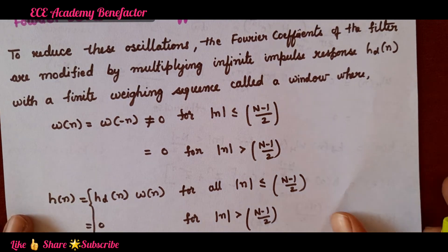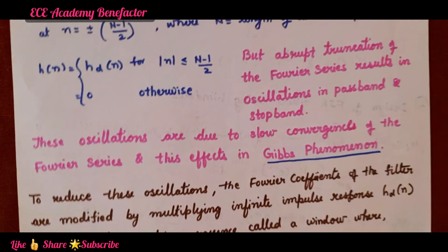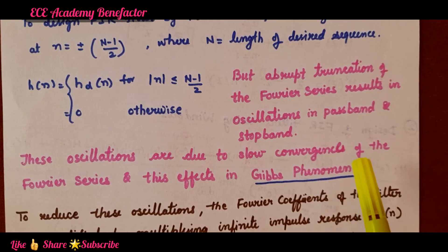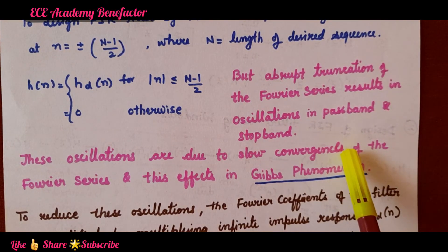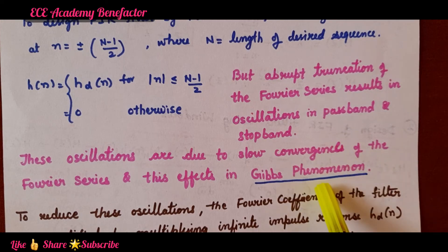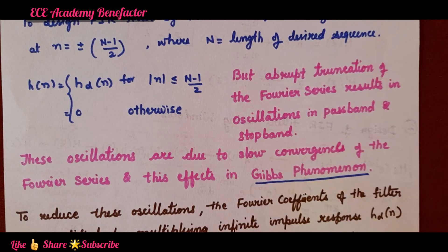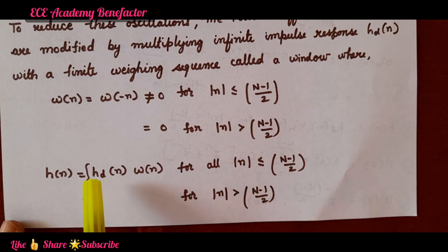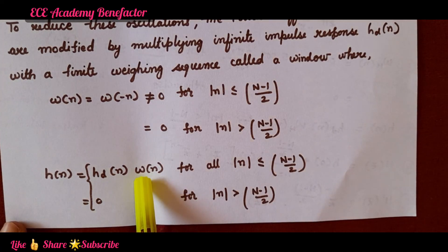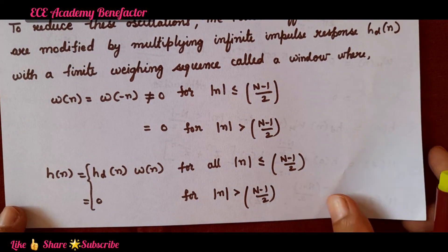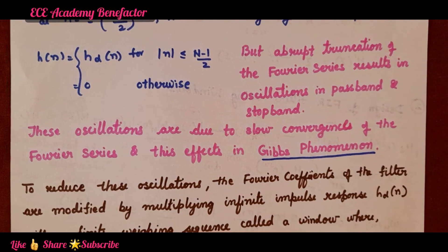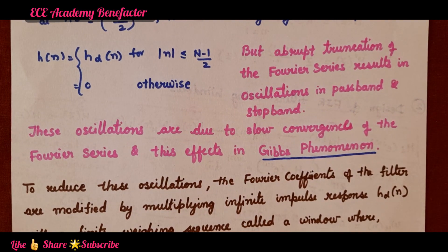So, Gibbs phenomenon occurs due to the slow convergence of the Fourier series, resulting in oscillations in pass band and stop band. It is known as Gibbs phenomenon and it can be avoided by multiplying H_d(n) with a finite weighing sequence to get H(n). I hope you have understood the class. If you have any queries, you can post in the comment section.